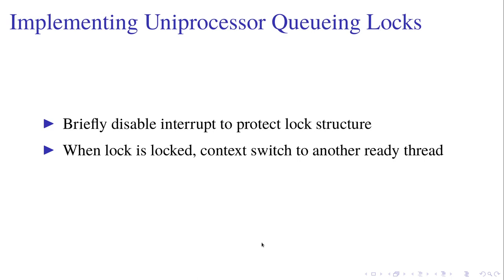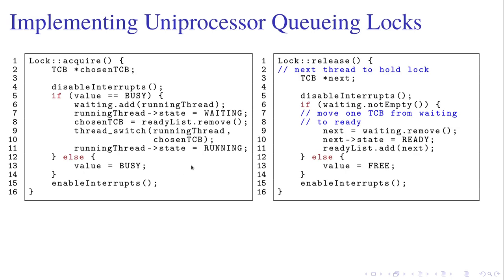To have a better design, we implement uniprocessor queuing locks. The idea is that we briefly disable the interrupt to protect the lock's data structure, and when the lock is already locked we don't wait on it — we just context switch to another thread that is ready. When acquiring the lock, we disable interrupts and test whether the lock is busy. If it's not busy, we set the value to busy and enable interrupts. If it is busy, we add the current thread into the waiting list, set the current thread to waiting, choose a thread in the ready list, switch to this new thread, set the new thread state to running, and then enable interrupts.